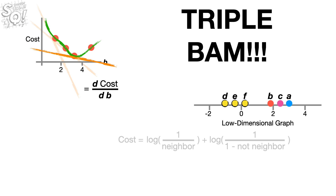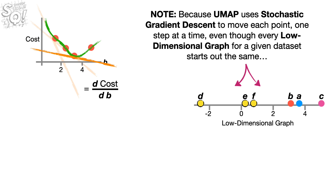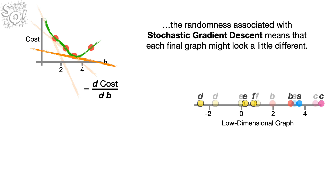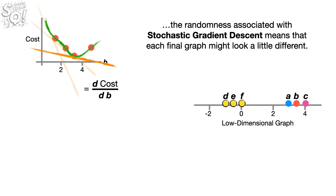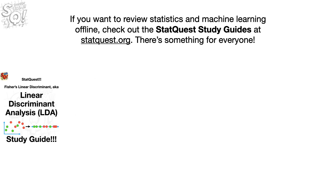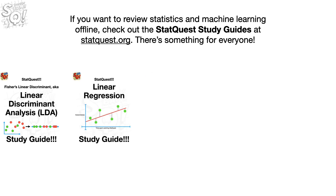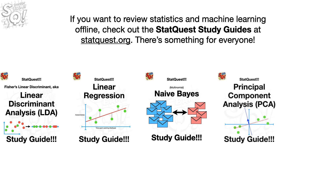Note, because UMAP uses stochastic gradient descent to move each point one step at a time, even though every low-dimensional graph for a given dataset starts out the same, the randomness associated with stochastic gradient descent means that each final graph might look a little different. And now it's time for some shameless self-promotion. If you want to review statistics and machine learning offline, check out the StatQuest study guides at StatQuest.org.